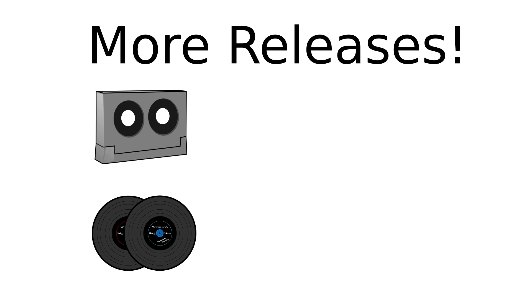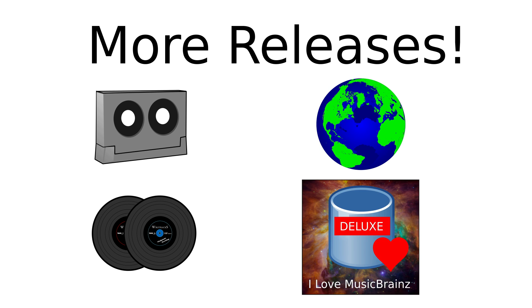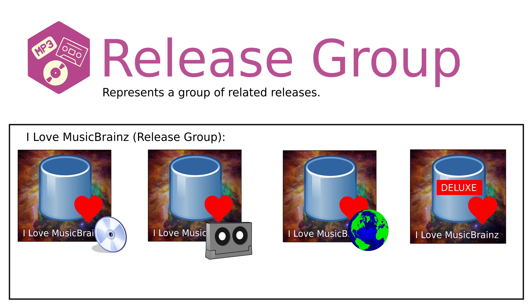It turns out that the album 'I Love Music Databases' skyrocketed, so we decided to release vinyl and cassette versions alongside our original CD and digital formats. A different record label even offers to release it internationally and create a deluxe version of the album. These all count as different releases because they either exist on different mediums, were released in different regions, were released under a different label, or had exclusive tracks not on the original. But since they're fundamentally the same album, we can group these into a release group — a single group of similarly related releases. Keep in mind that a release can belong to only one release group.